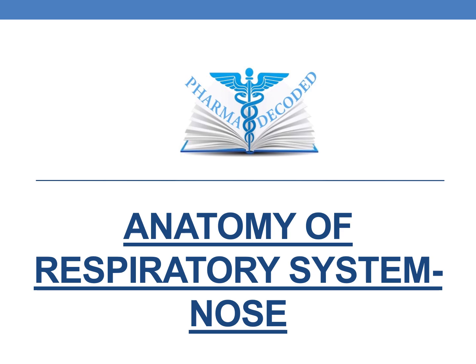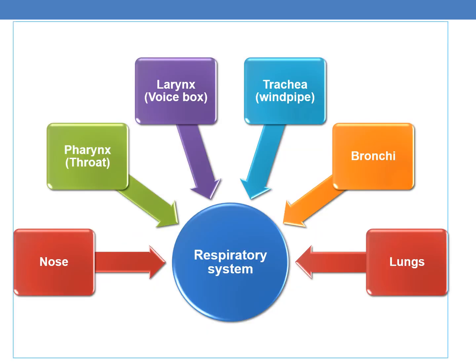Hello everyone. Now let us discuss the anatomy of the respiratory system, and in the current session we will be discussing about the nose. The respiratory system is composed of the nose, pharynx or throat, larynx or voice box, trachea or windpipe, bronchi, and lungs. In the current session we will be discussing about the nose.